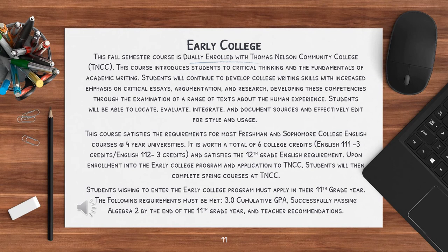Students will be able to locate, evaluate, integrate, and document sources and effectively edit for style and usage. This course satisfies the requirements for most freshman and sophomore college English courses at four-year universities. It is worth a total of six college credits and spans 16 weeks. English 111 is the equivalent of three credits and runs a total of eight weeks, and English 112 is the equivalent of three credits and follows with the next eight weeks. It also satisfies the 12th grade English requirement.